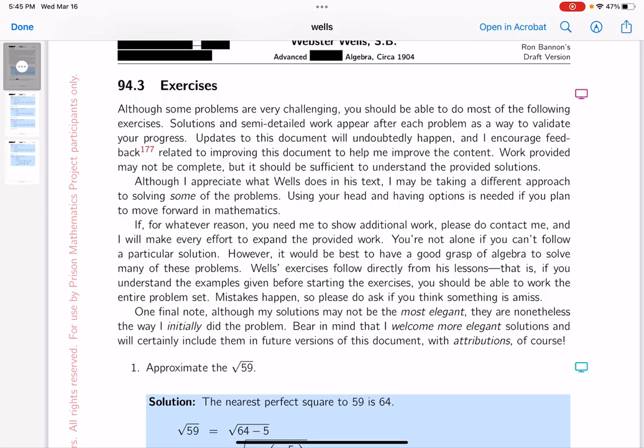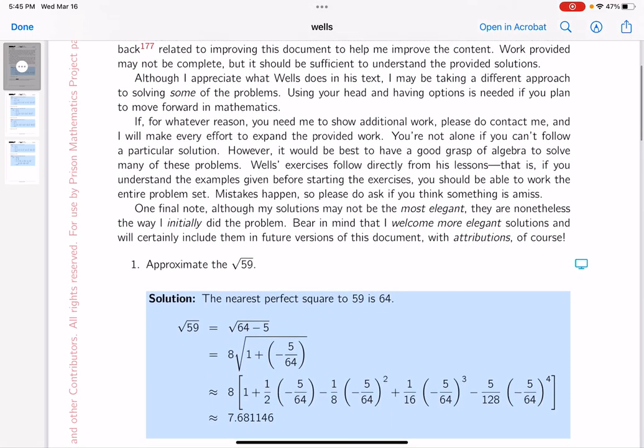Okay, 94.3 of the exercises. We'll start with problem number one. By the way, this might seem ridiculous to you, but we're using a binomial theorem to approximate these things. I've got to be honest with you, if I were going to approximate the root of 59, I would not go to the binomial theorem to do it, or the generalized binomial theorem to do it. I would use a calculator.